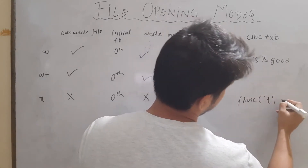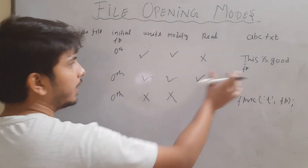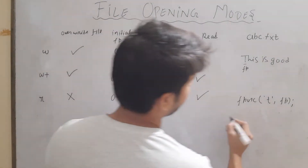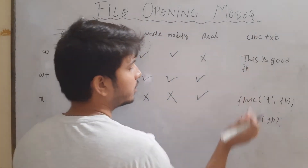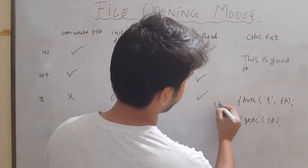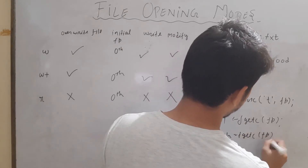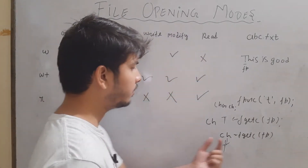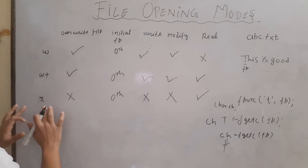If you bring the file pointer to any location and perform fputc with character 't' and fp, this function will neither write nor modify the character in the file. But reading is allowed. For example, fgetc(fp) will return the character 't', and if I create a char variable ch and write ch = fgetc(fp), the character value 't' will be assigned to ch.